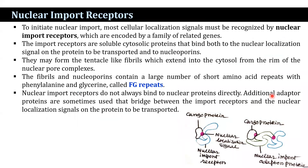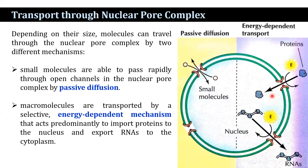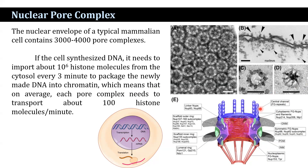To initiate nuclear import, most nuclear localization signals must be recognized by nuclear import receptors, which are imported by a family of related genes. The import receptors are soluble cytosolic proteins that bind both the nuclear localization signal on the proteins to be transported and to nucleoporins, and they may form tentacle-like fibrils. These fibrils and nucleoporins contain a large number of short amino acid repeats with phenylalanine and glycine — called FG repeats — which serve as binding sites for the import receptors.